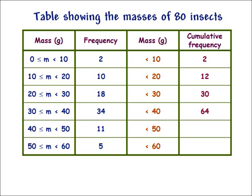30 plus 34 is 64, 64 plus 11 is 75, and 75 plus 5 is 80. Since we were told that there are 80 insects, we should expect the final value in this column to agree with that.